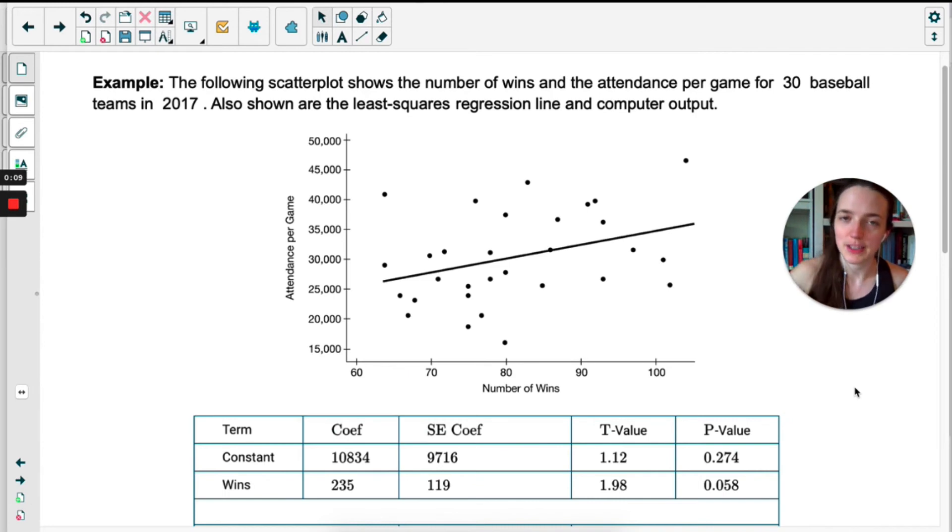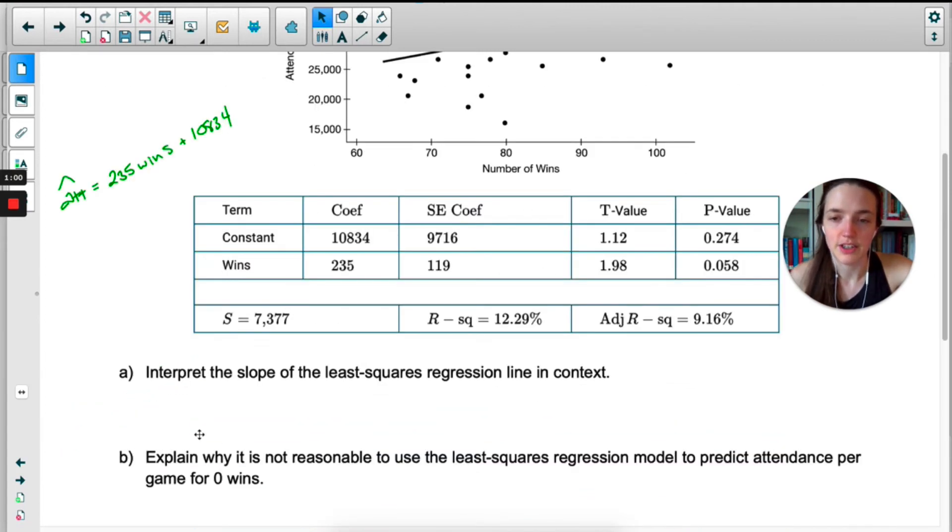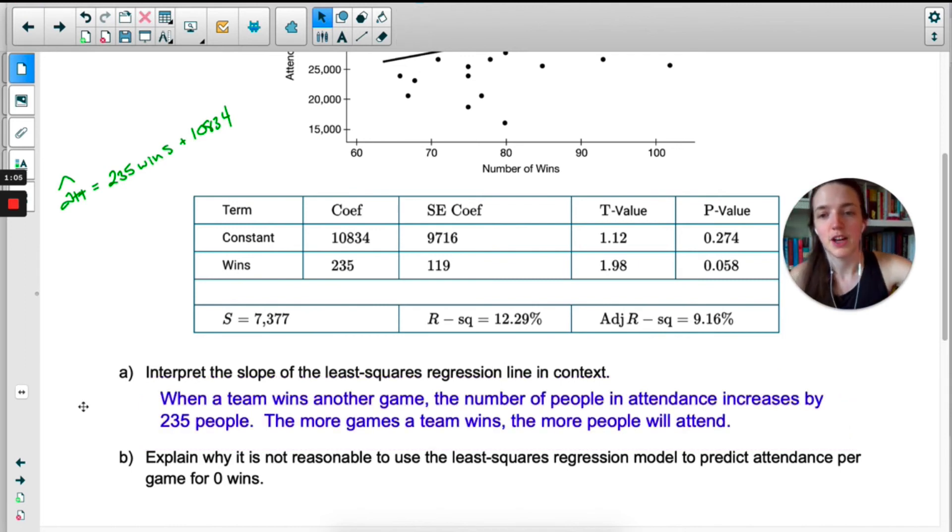So the example on the next page of your notes is an example of a free response question that you might actually see on the AP test. So what I'd like you to do is pause the video and do as much of this as you can on your own, and then we'll go over answers together. Okay, before we even look at questions, I'm going to take this output and just write out the equation of the line just so that I have it. Okay, interpret the slope of the least squares regression line in context. So in context, when a team wins another game, the number of people in attendance increases by 235 people. And I got that number from right here. It's the coefficient of the x variable.